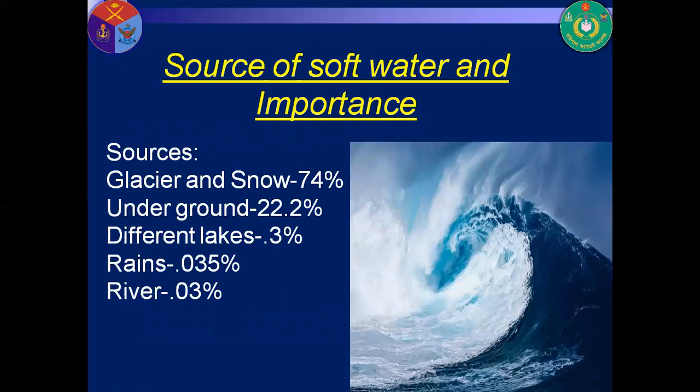Water is very important for us. We use it for different purposes: drinking, housing activities, and different industries such as weather, ceramic, and food industries. We need pure water. The sources of pure water are: glacier and snow 74%, underground water 22.2%, different lakes 3%, 0.3%, rain 0.035%, and rivers 0.03%. These are the sources of soft and pure water. Glacier and snow constitute the maximum percentage — 74% — of the source of soft water.